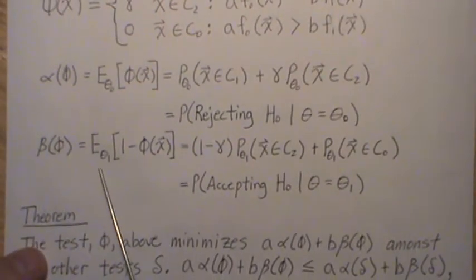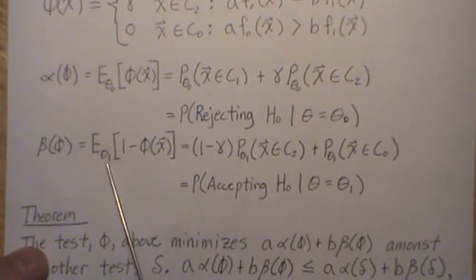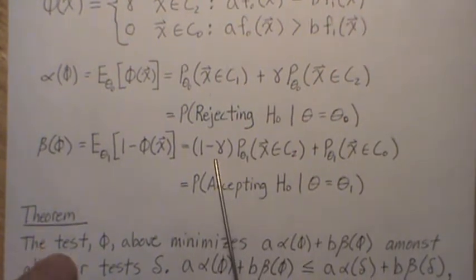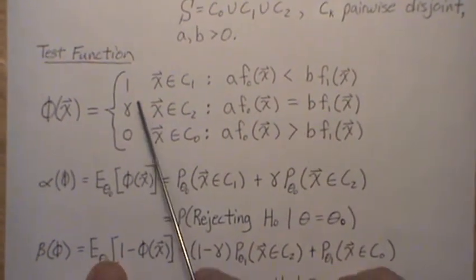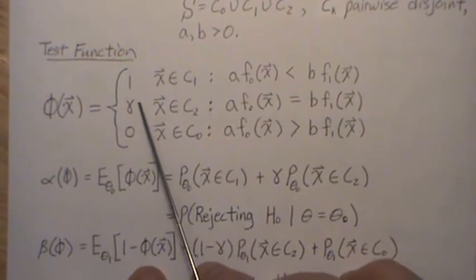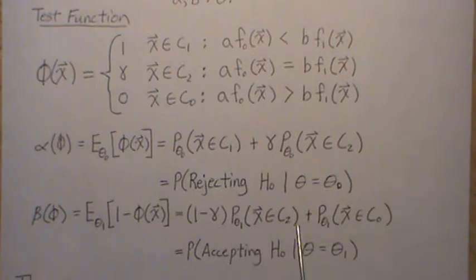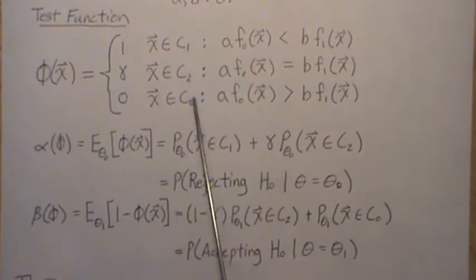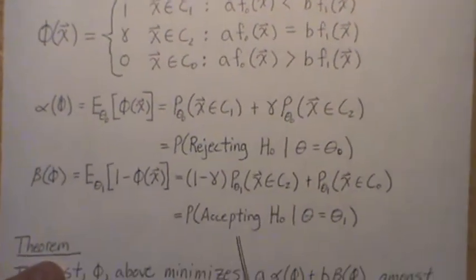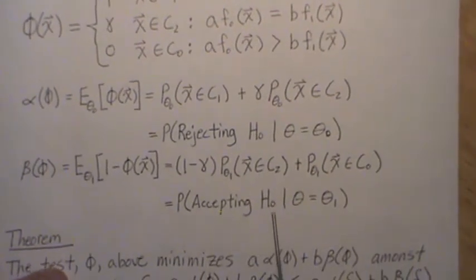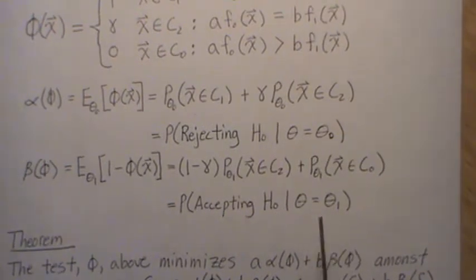The Type II error is expected value of 1 minus phi under the alternative. So phi can take on the values 1, gamma, and 0. So 1 minus that would be 0, 1 minus gamma, and 1. So 1 minus gamma times the probability of being in this region plus 1 times the probability of being in this region. That is the probability of accepting the null hypothesis when the alternative is really true. So these are the two types of errors.